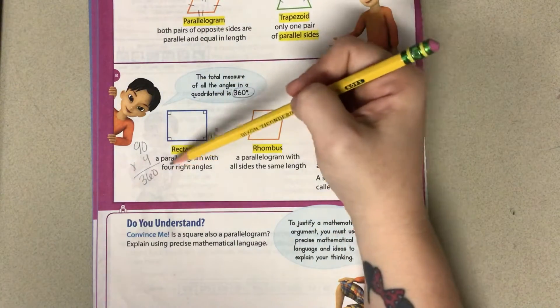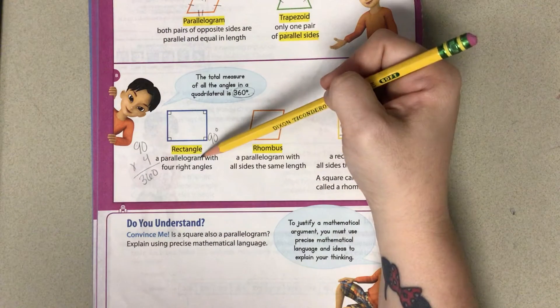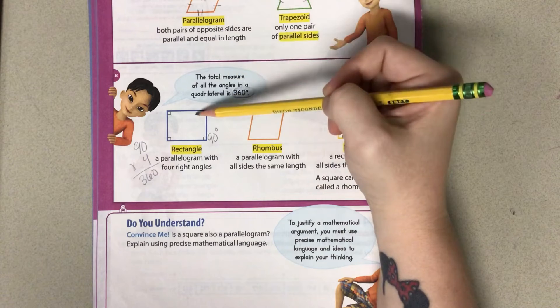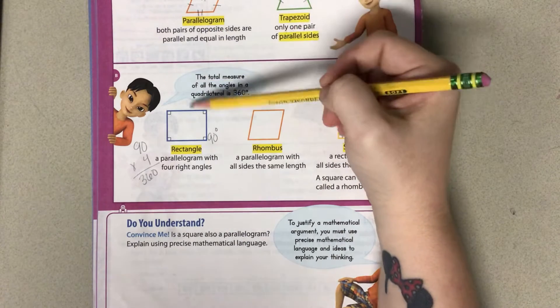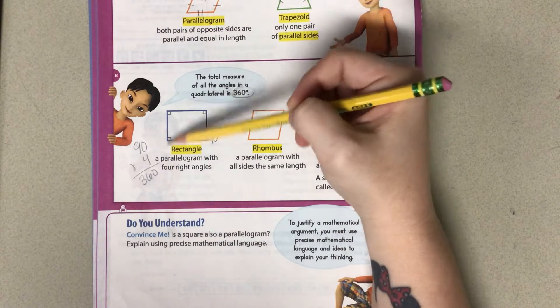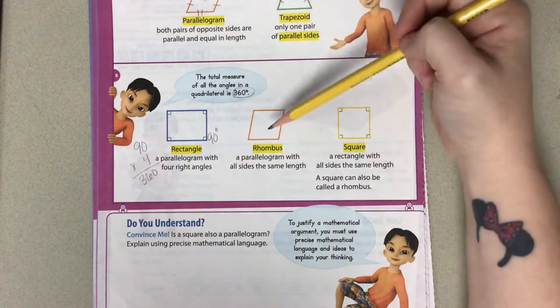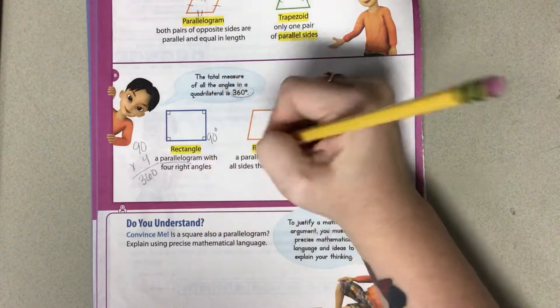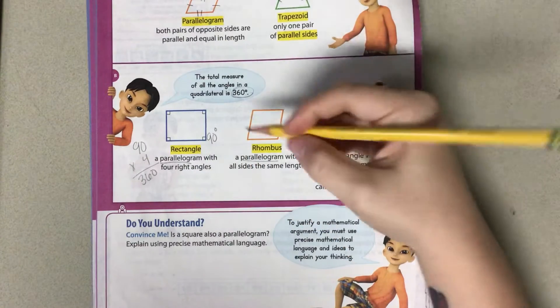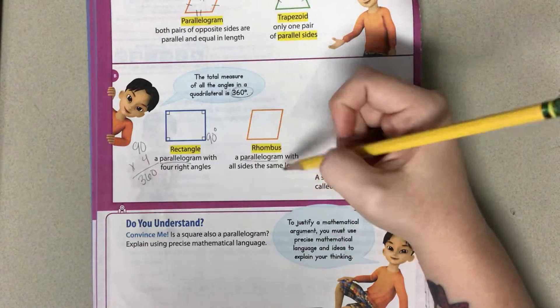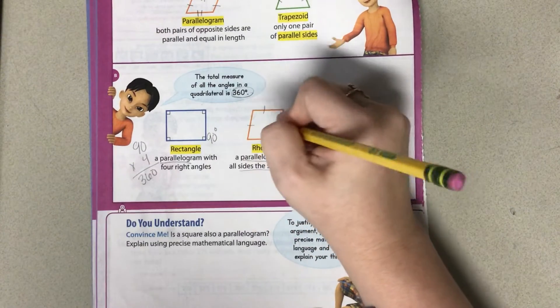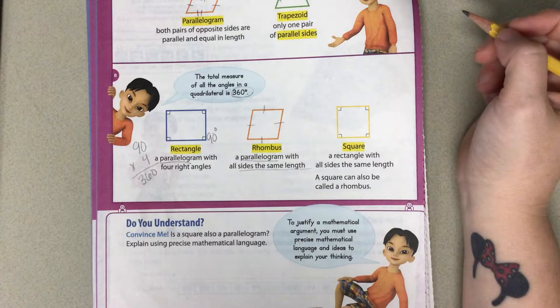A rectangle is any parallelogram with four right angles, which means it is part of the parallelogram side of the quadrilaterals, but it has to have four right angles. A rhombus is also a part of a parallelogram. This one doesn't worry about angles, this one's all about sides, and it says all the sides are the same length, so this one's looking at all four sides being the same.